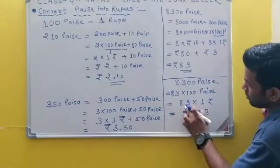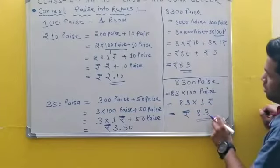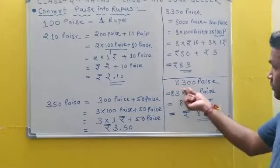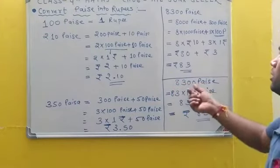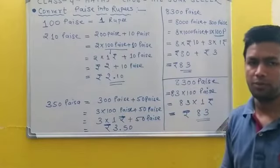So if you do this, 83 into 1, how much will it be? 83 Rupees. So 8300 Paise equals 83 Rupees. This was the concept, hope you understood.